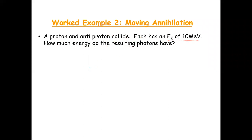What we talked about yesterday was how when matter — a proton — meets antimatter, an antiproton, the two of them meet and annihilate. When they annihilate, they both convert all their mass into pure energy in the form of two gamma photons. Gamma is just the symbol we use — so two photons.